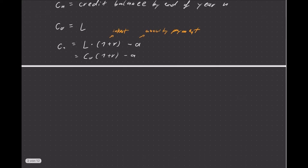Now in general, that becomes complicated quickly if you want to know what is your credit balance by the end of the N plus first year. And of course that is equal to C_N times (1+R). So you pay interest on the remaining loan after the end of the last year, and then you again pay your annuity.